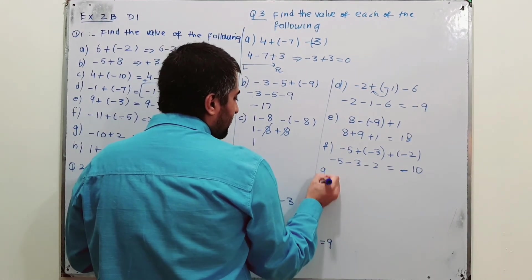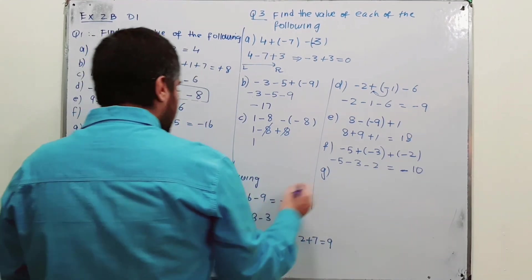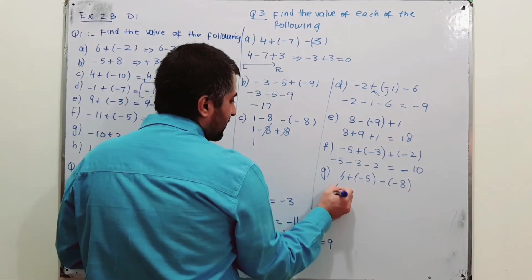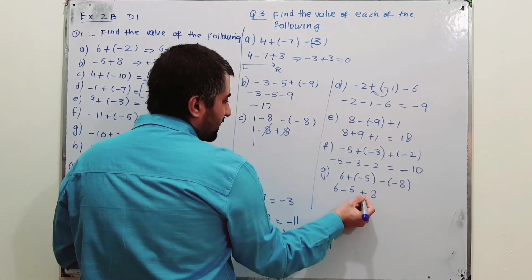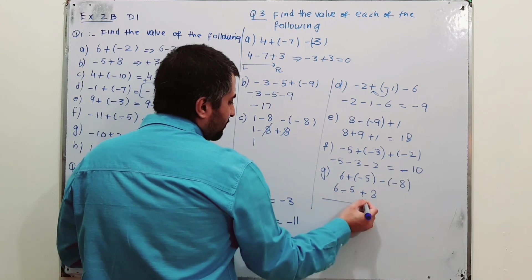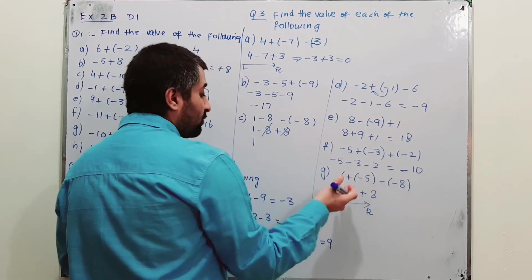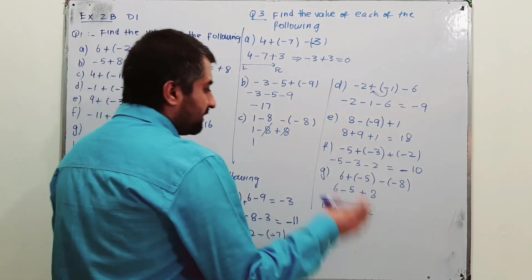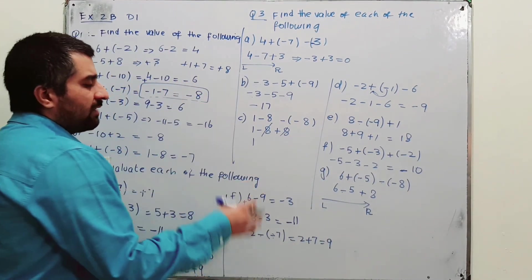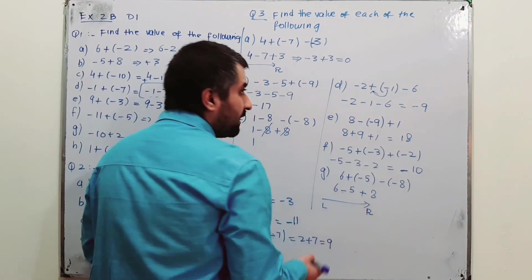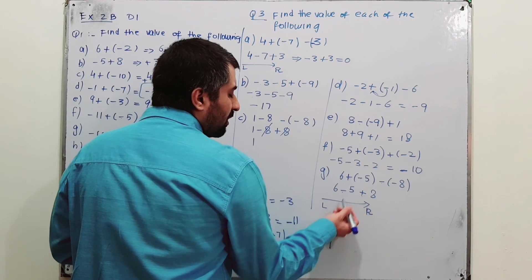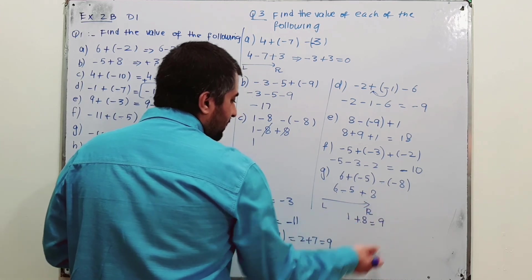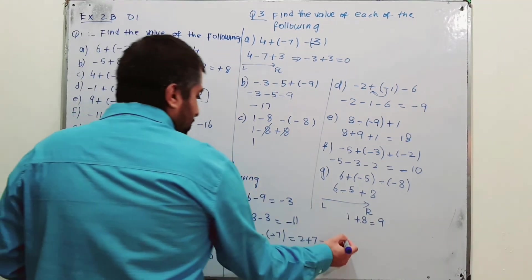Part G: 6 plus (minus 5) minus (minus 8). Open the brackets — minus times plus gives minus 5, and minus times minus gives plus 8 — so: 6 minus 5 plus 8. Moving left to right, subtraction comes first: 6 minus 5 is 1, then 1 plus 8 gives 9.